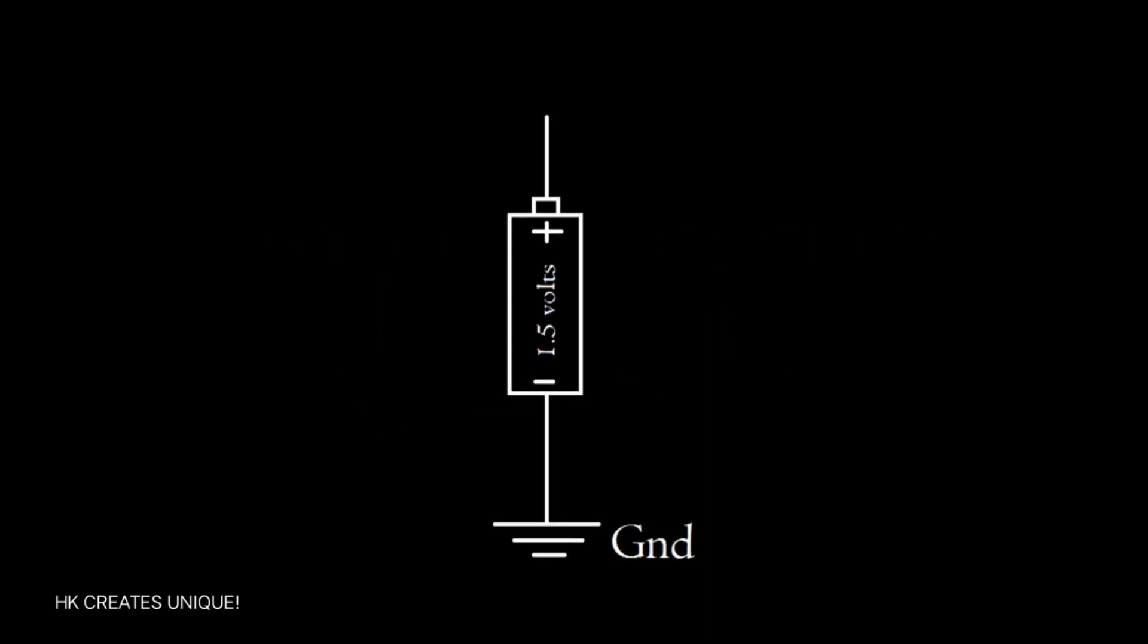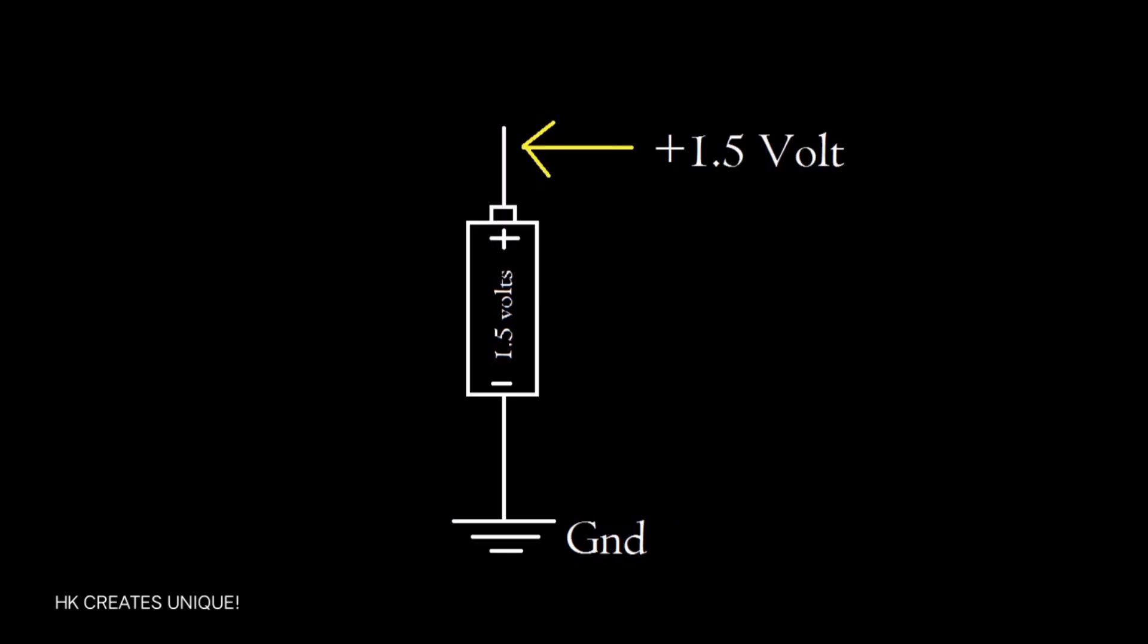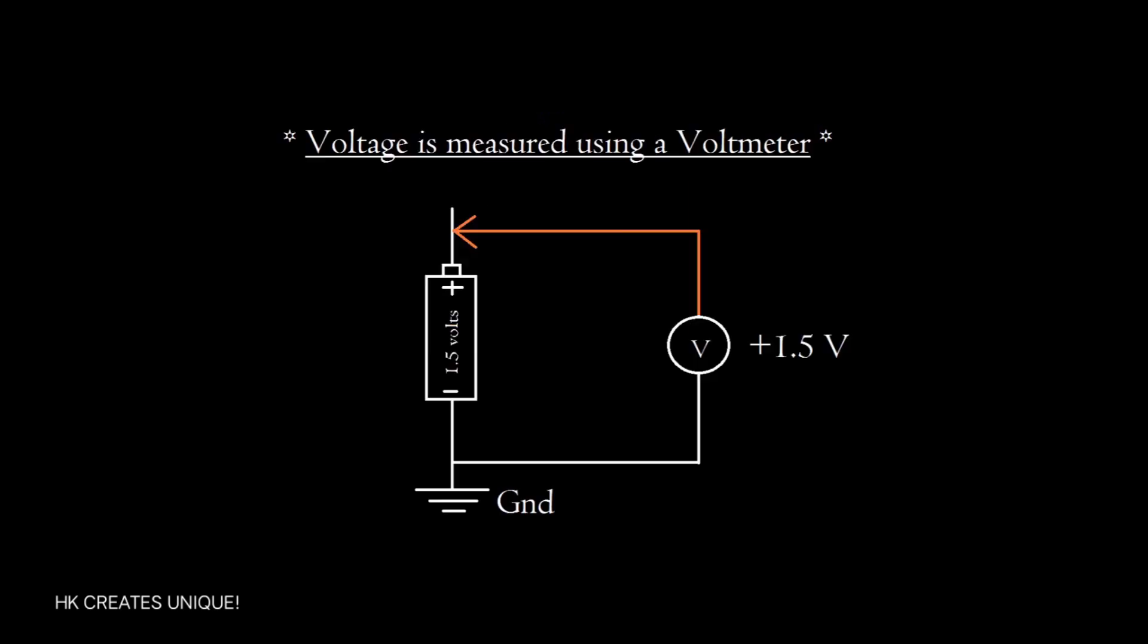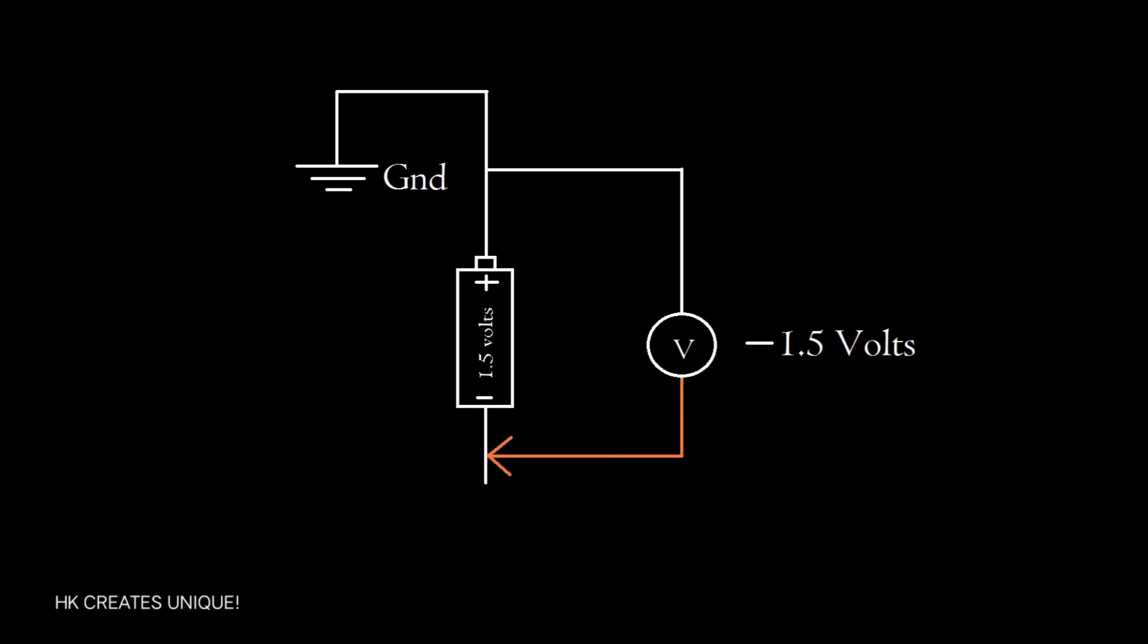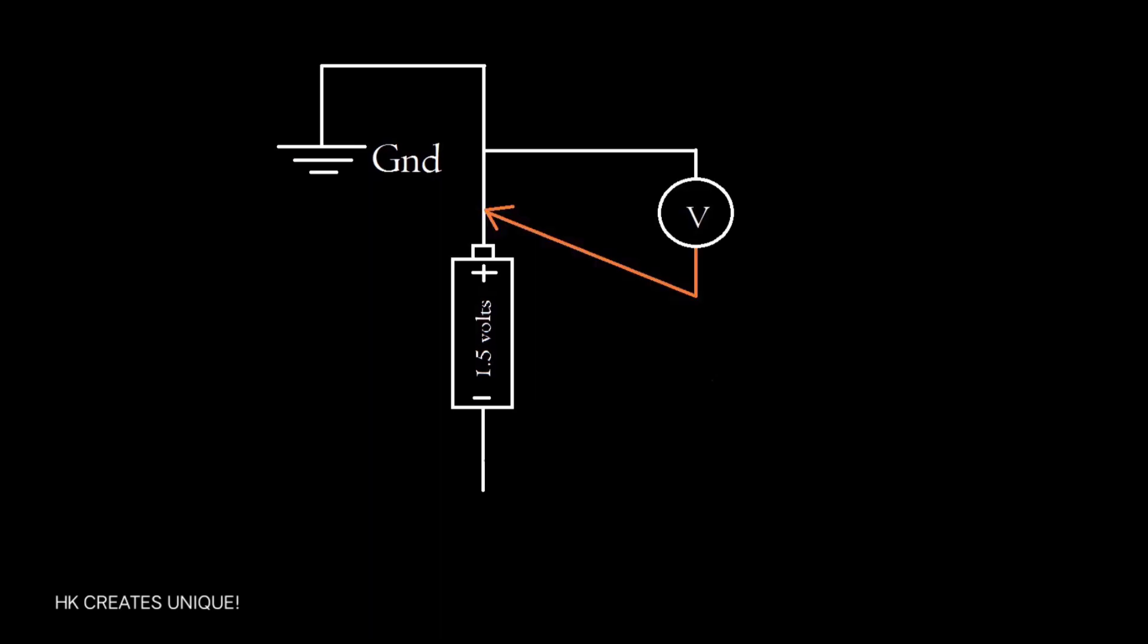If we make negative terminal the ground terminal, then voltage at the positive terminal is plus 1.5 volts. If we make positive terminal the ground terminal, then voltage at the negative terminal is minus 1.5 volts. Now what voltage is at the ground terminal? Well, it is 0 volts.